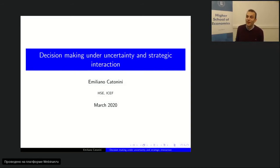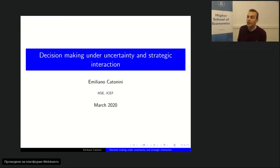Hello everybody, my name is Emiliano Cattonini, I'm associate professor of microeconomics at the International College of Economics and Finance at Higher School of Economics. What we're going to talk about today is how decision-making is troublesome sometimes when there is uncertainty about some relevant parameter of the problem. This is a very relevant issue for economics and finance — most economic and financial decisions are taken in conditions of uncertainty.